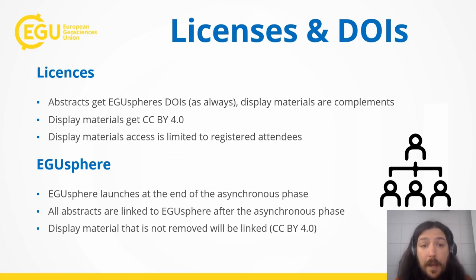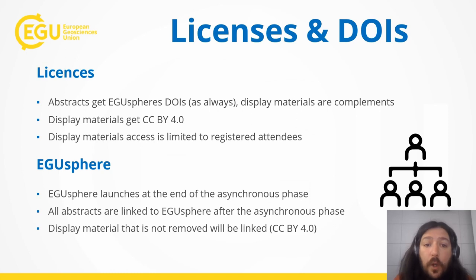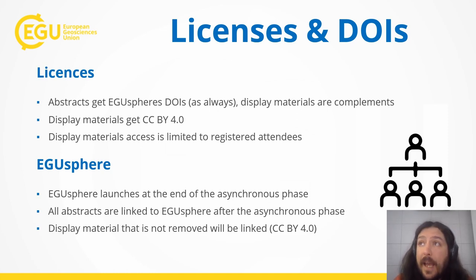In terms of licenses, abstracts will get DOIs as they always do, and display materials will be limited to registered attendees only. The EGUsphere will launch at the end of the asynchronous phase. All abstracts will be linked to the EGUsphere after that phase, and the display materials that are not removed during this phase will be linked with a CC BY 4.0 license.